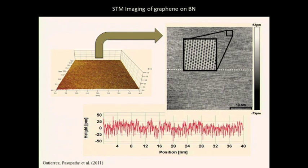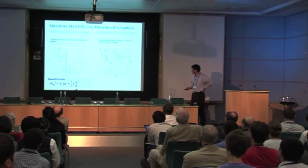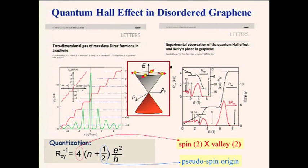One way to characterize the electronic properties is the quantum Hall effect. Old results from our group and the Manchester group show quantum Hall steps in disordered graphene on silicon oxide. The notable feature is quantized steps going in four times half-integer steps, explained by pseudo-spins, Berry phase, and related effects.